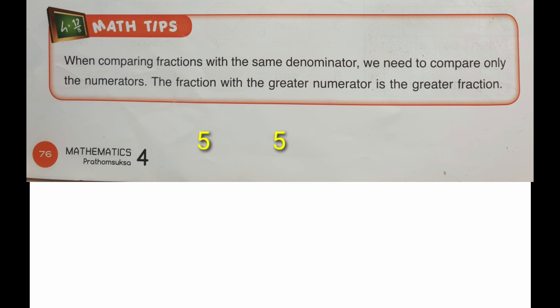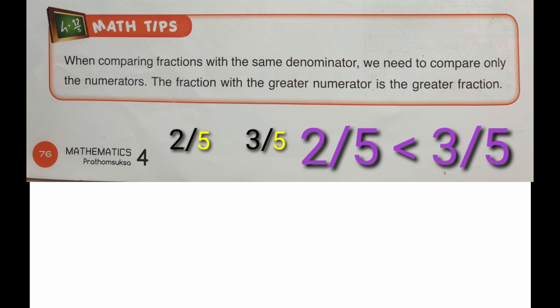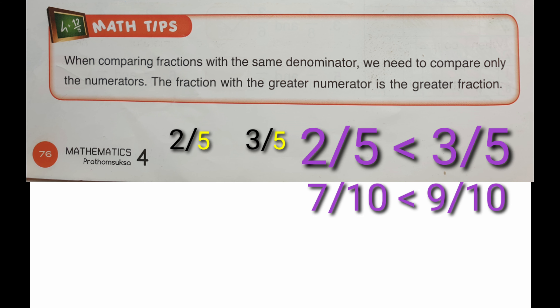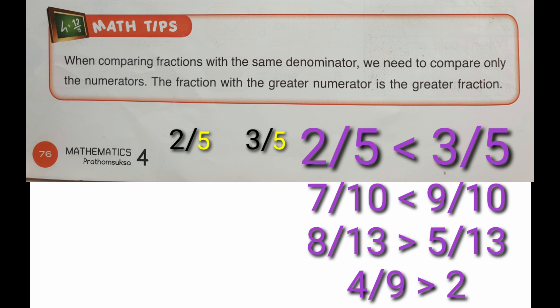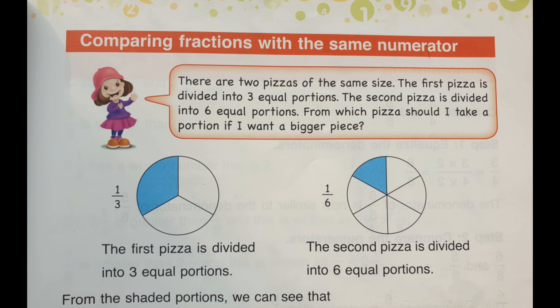Suppose we have five as our denominator and two and three as our numerators. Because two is smaller than three, two fifths is smaller than three fifths. More examples: seven tenths is smaller than nine tenths; eight thirteenths is greater than five thirteenths; four ninths is greater than two ninths.